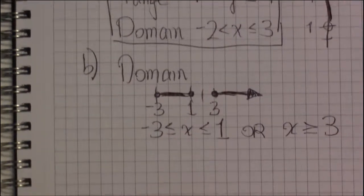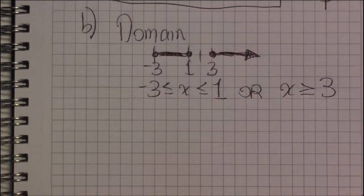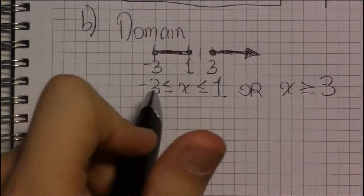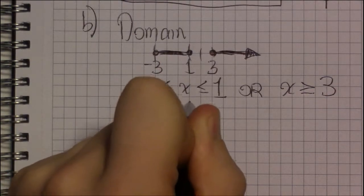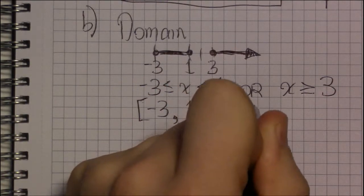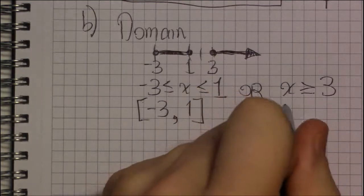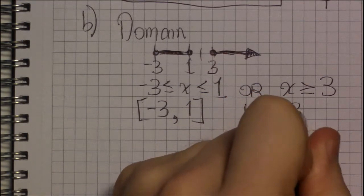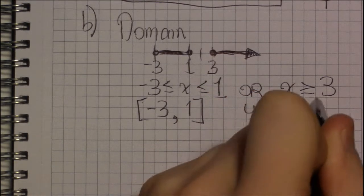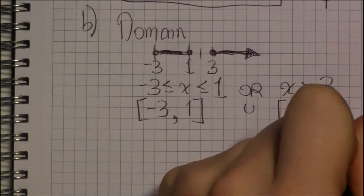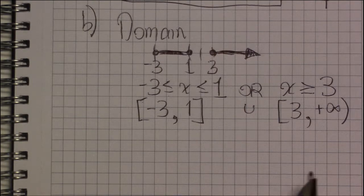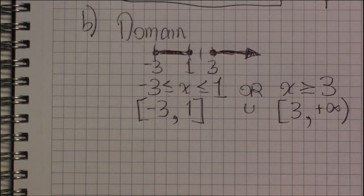And if you want, the interval notation for this is minus 3 comma 1, or is that funny cup, that union, and then our leftmost boundary is 3, and we move all the way to the right, which is represented by a plus infinity, and infinities always get parentheses.